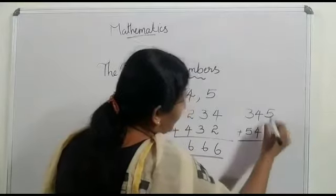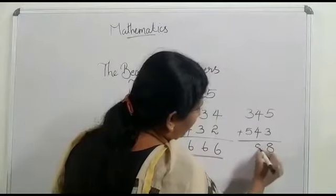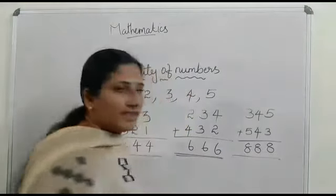Okay, then let us add. Find the sum means let us add these two numbers. 8, 8, 8. 888.